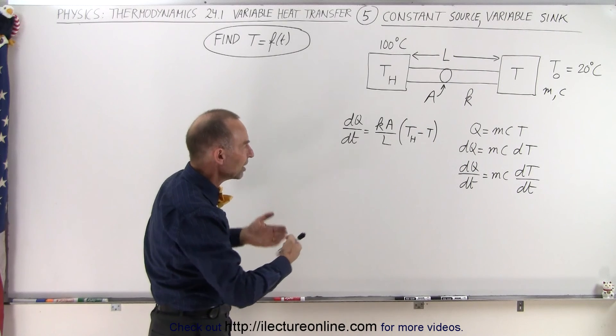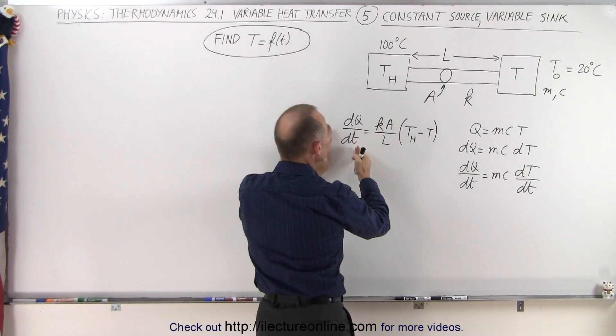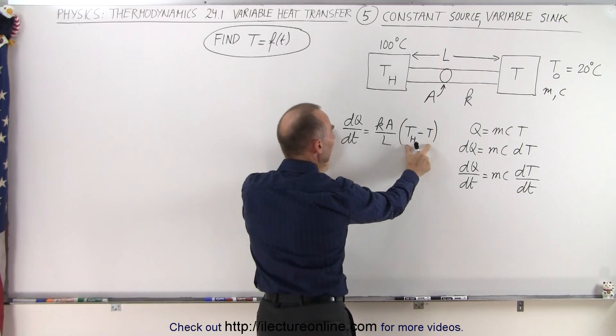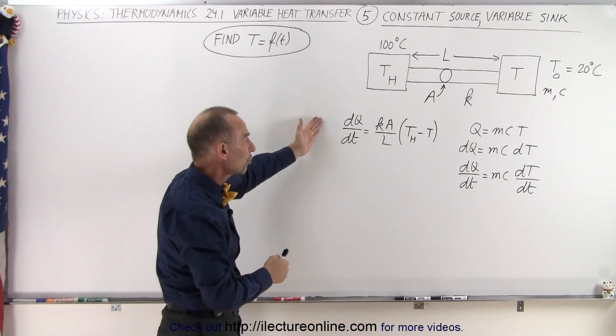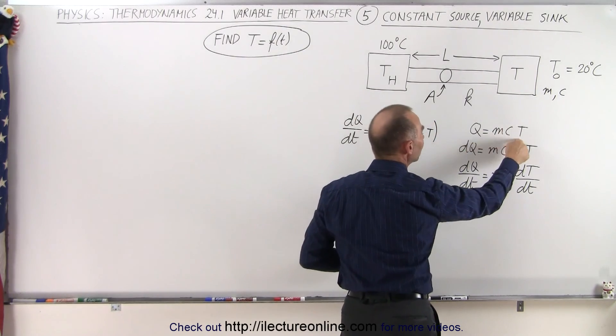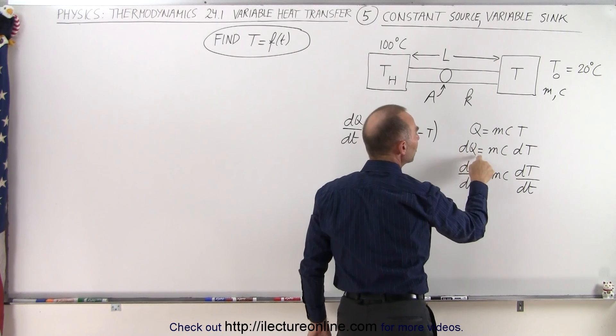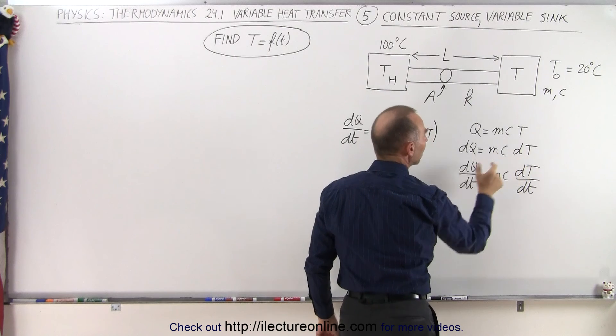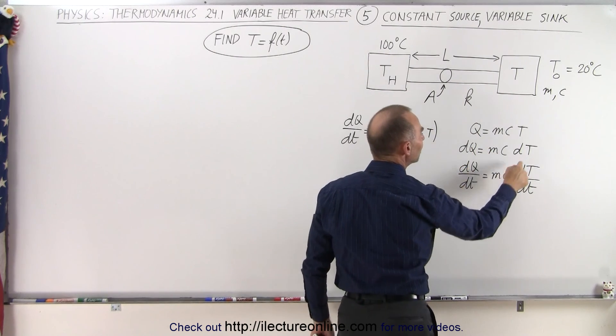Well by now you should see the methodology. You start with the two equations that dQ/dt is equal to KA over L times the difference in the temperature between the source and the sink. That's the heat transfer equation and then we have the heat content here Q equals MC times T and we end up with the heat transfer equation dQ is equal to MC dT and we can write that as a differential equation dQ/dt is equal to MC dT/dt.